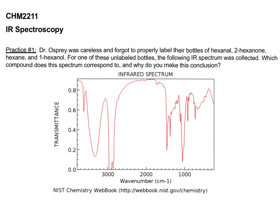So let's take a look at some practice problems. In this first practice problem, it says that Dr. Osprey was careless and forgot to properly label the bottle of hexanal, 2-hexanone, hexane, and 1-hexanol. For one of these unlabeled bottles, the following IR spectrum was collected. Which compound does this spectrum correspond to? How do you make that conclusion?